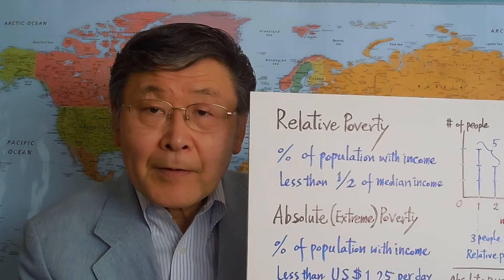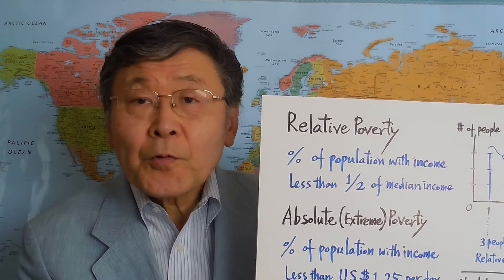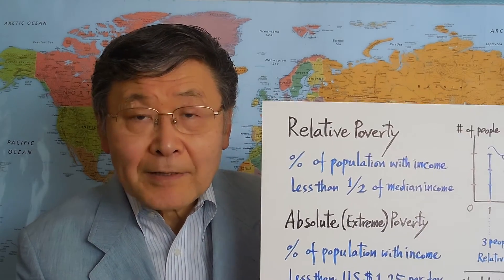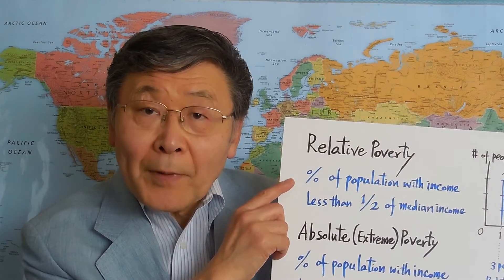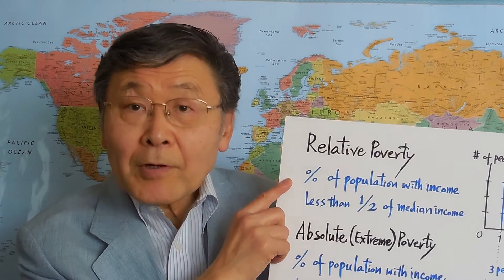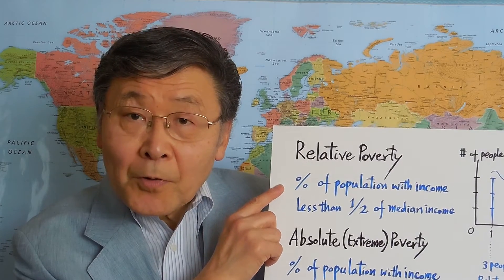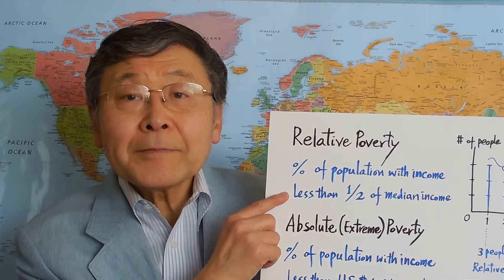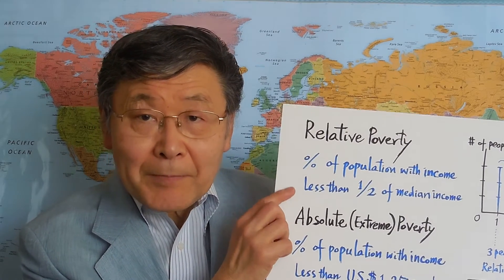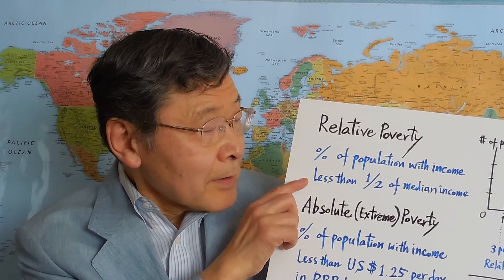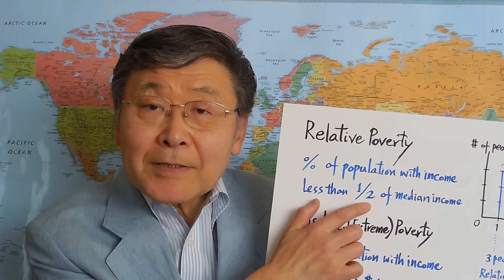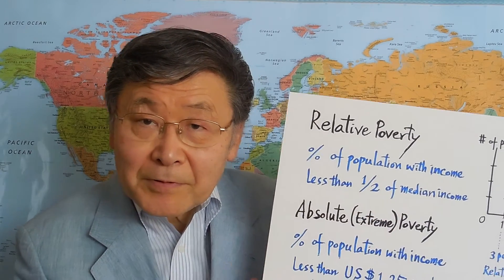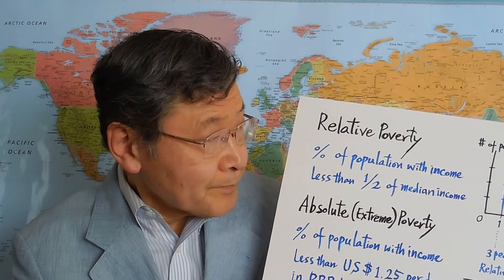Next, we will focus on poverty. There are two ways of measuring poverty. One is relative poverty. For a given country, you always have relatively poor people. The relative poverty rate is the percentage of people with income less than about half of median income. In some cases, it may not be exactly one half — it could be slightly above — but it is a certain fixed fraction of median income.